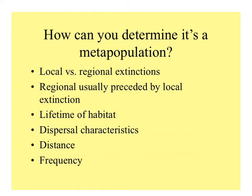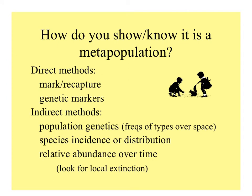How do you know if a species is functioning as a metapopulation? It depends on local versus regional extinction patterns. Regional extinction is usually preceded by local extinctions. The lifetime of habitat is important, as well as dispersal characteristics of the organism, the distance of the patches from one another, and how frequent the species is. Direct methods include marking and recapturing animals, and using genetic markers to detect movement among patches. Indirect methods involve looking at species incidence and changes over time across a greater area.